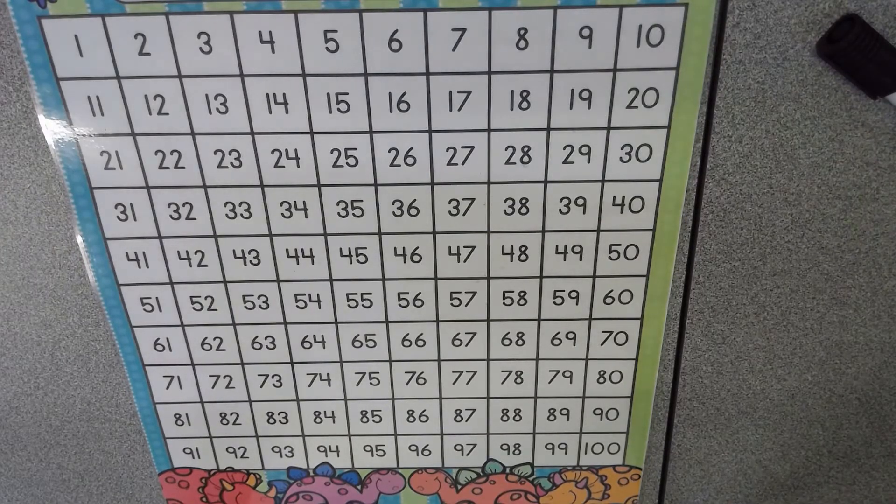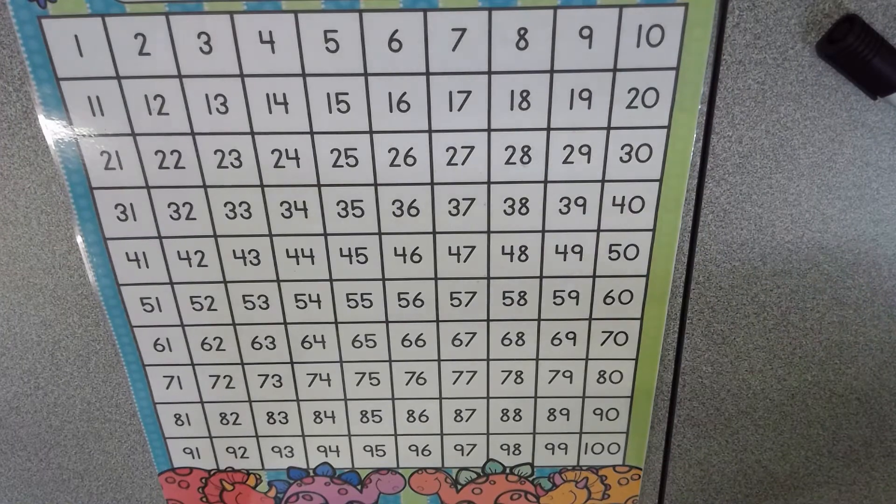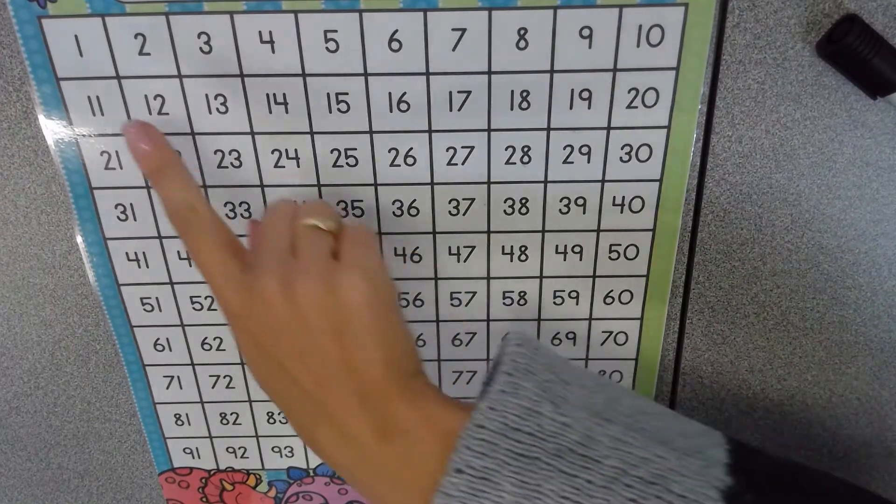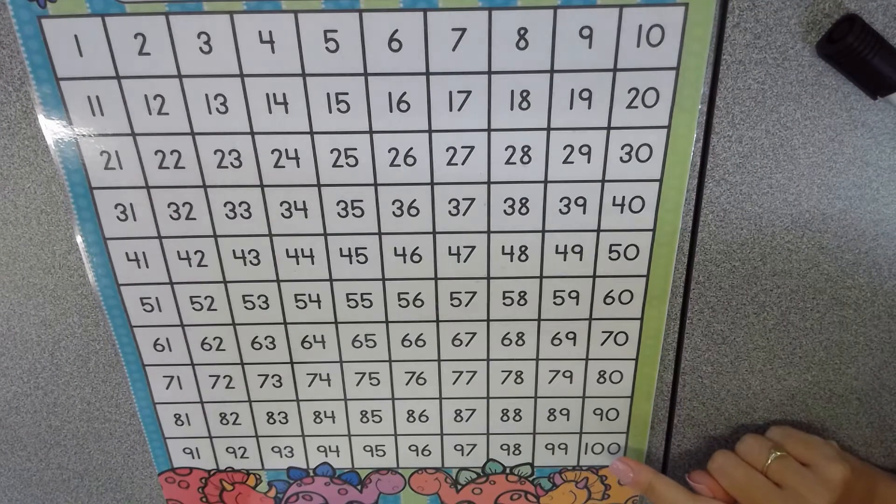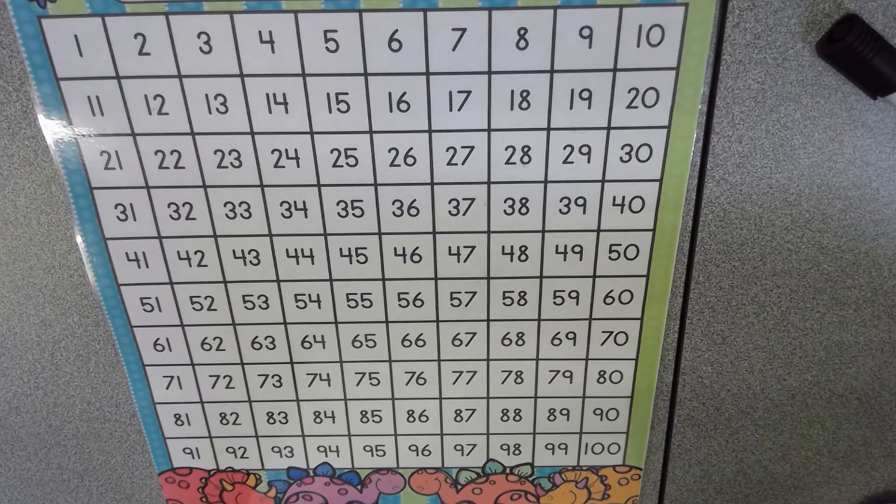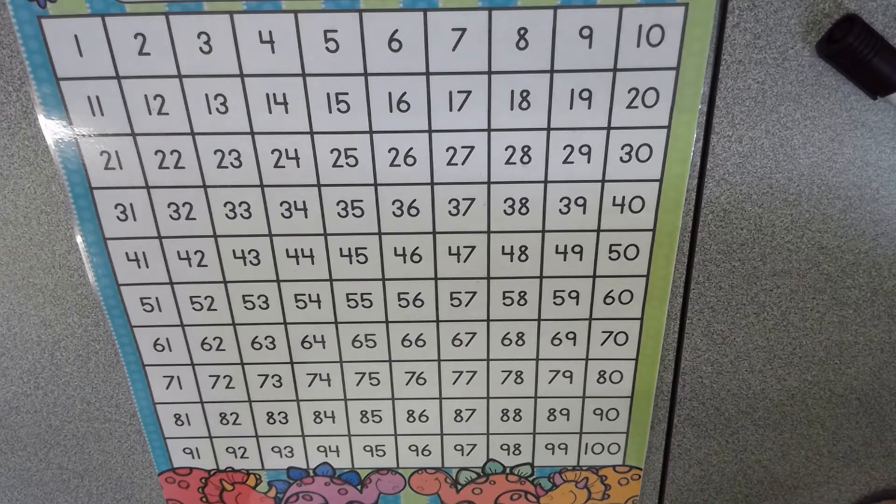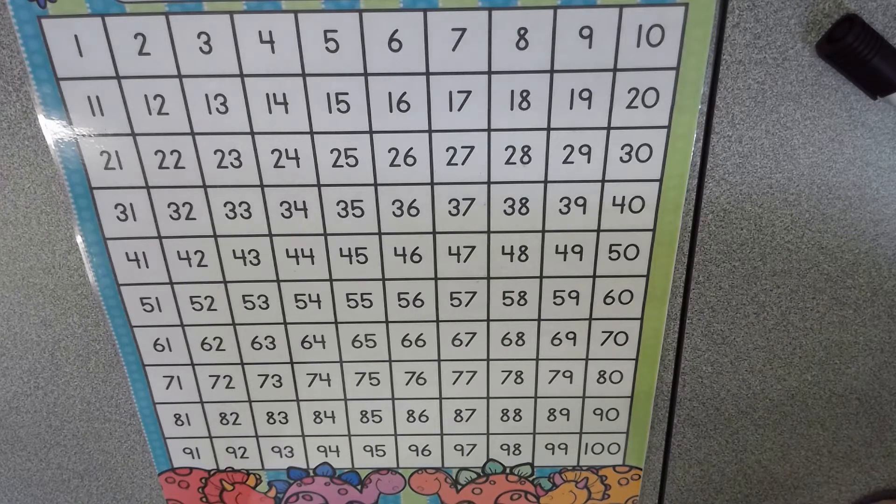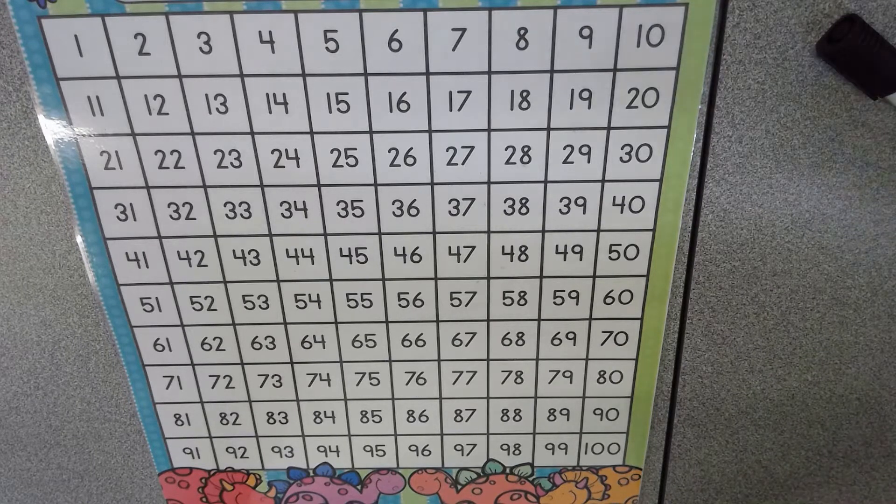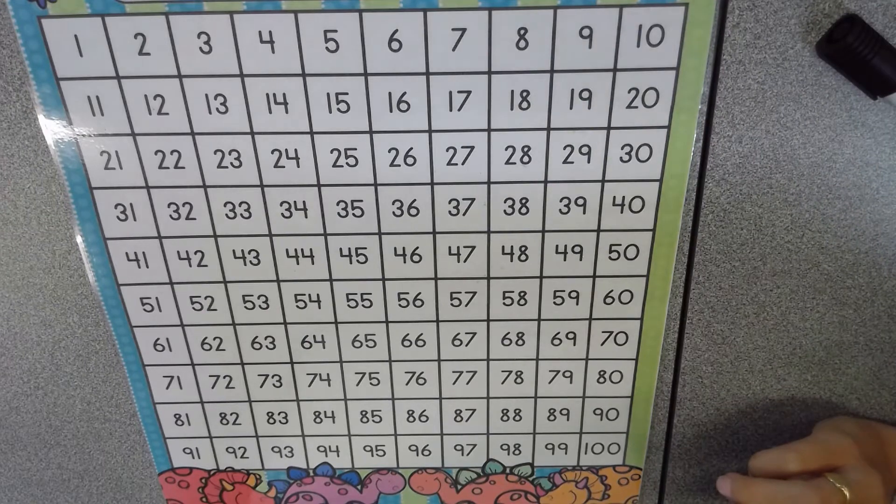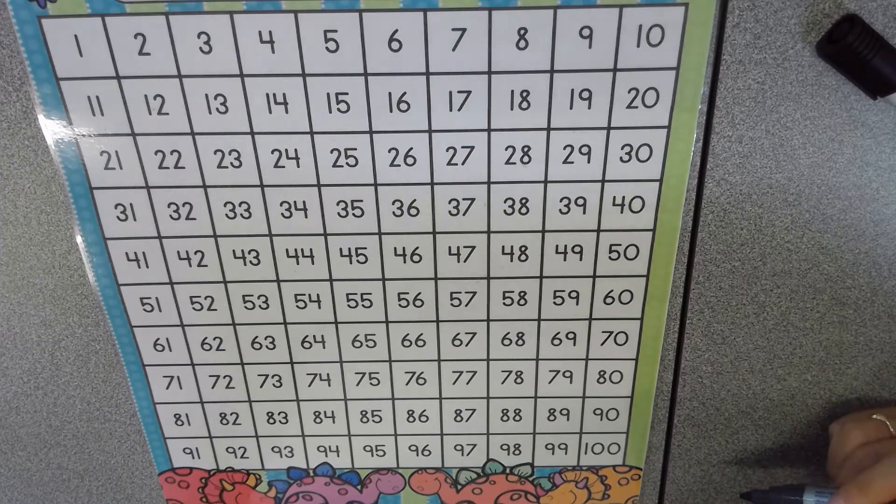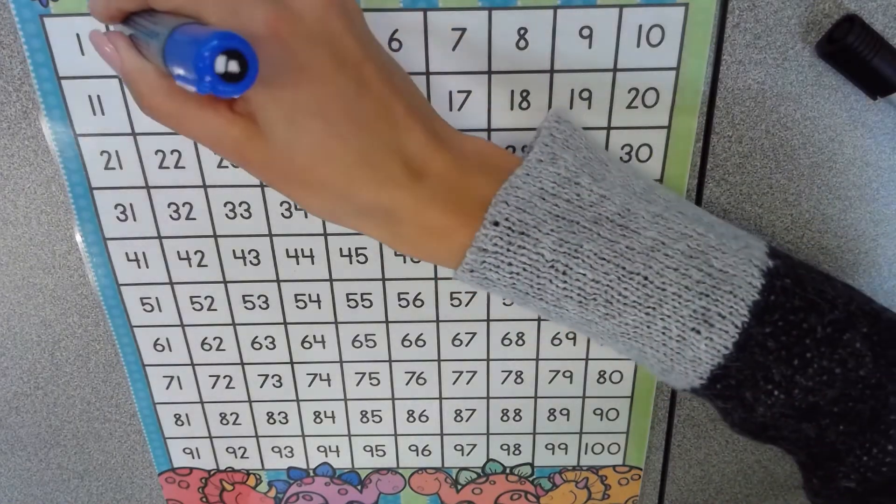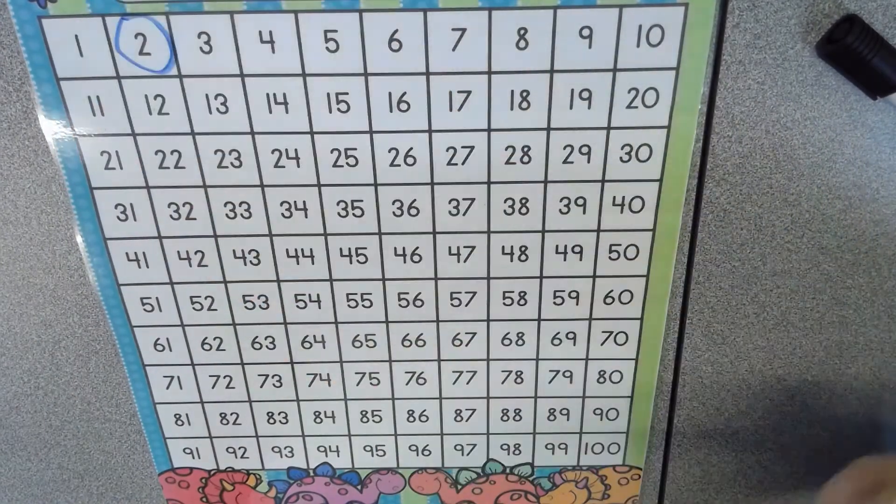So here we have a hundreds chart, and as you can see, it has all of the numbers starting at one and ending all the way at 100. A hundreds chart is a very useful tool for you to use when you are trying to learn your skip counting patterns. So with my texta, I'm going to show you how to identify the twos skip counting pattern. Now when we count by two, the traditional number we can begin at is of course the number two.